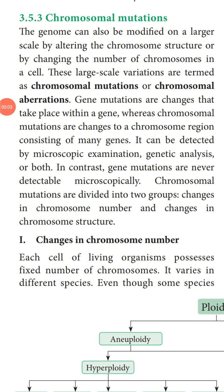Good morning children, welcome to another class of botany. In today's class we are going to study about chromosomal mutation. In the previous class we studied about the change in a gene or in a gene base pair, which is called gene mutation or point mutation. If this alteration is taking place in the structure or in the number of chromosomes, then it is called chromosomal mutation or chromosomal aberration.